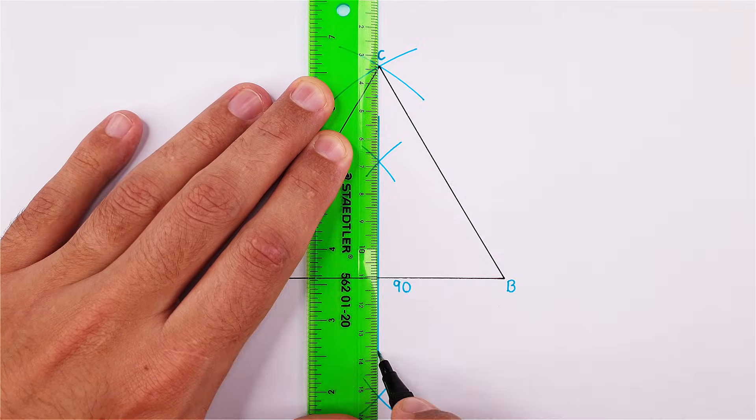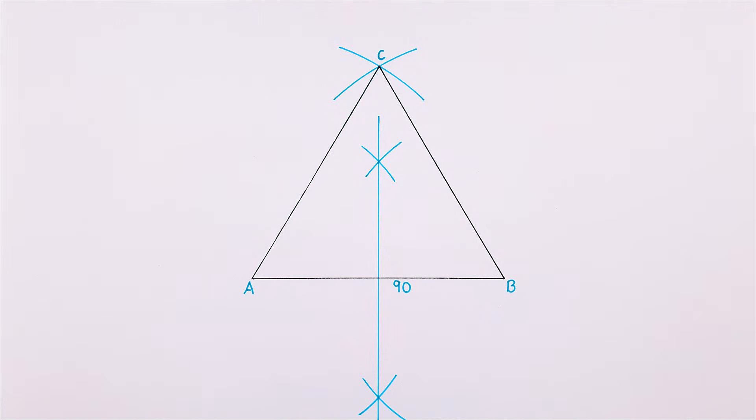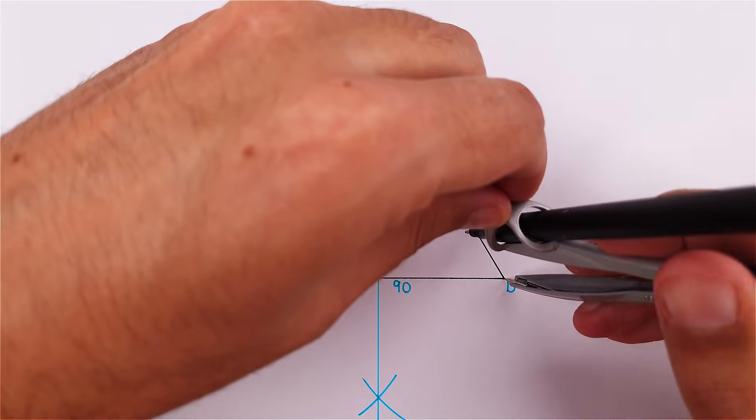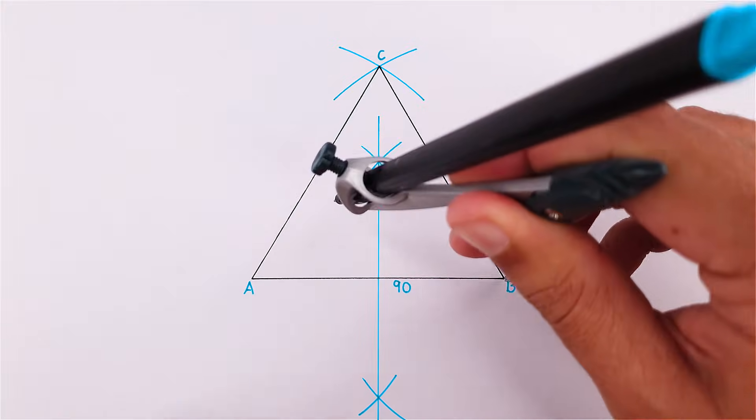Drawing the second perpendicular bisector, I will use side BC. Place your compass on point B and draw an arc on both sides of side BC.